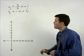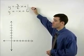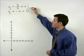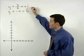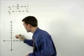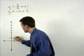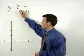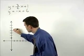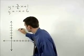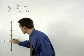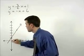So let's start by graphing the line y equals 3 halves x plus 1. It has a y intercept of 1 and its slope is 3 halves. So we go up 3 and over 2 and we have our first line.